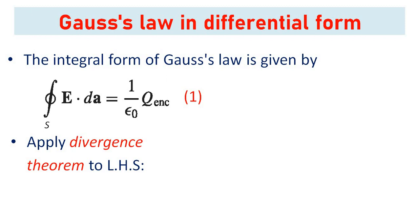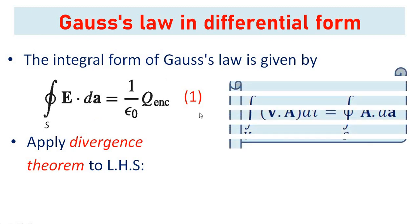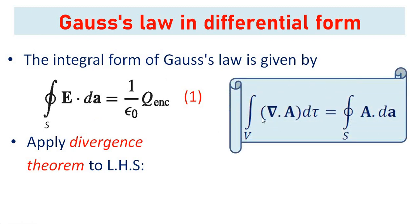Apply the divergence theorem to the left-hand side of this equation. This is Gauss's divergence theorem — a standard equation: the volume integral of the divergence of E over d-tau equals the closed surface integral of E dot dA. The surface integral of E dot dA on the LHS matches here, so we rewrite the LHS of Equation 1 using this divergence theorem: the surface integral of E dot dA equals the volume integral of divergence of E times d-tau.